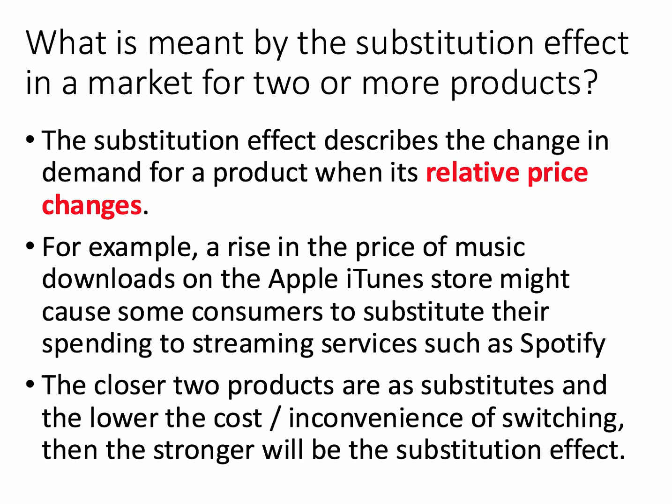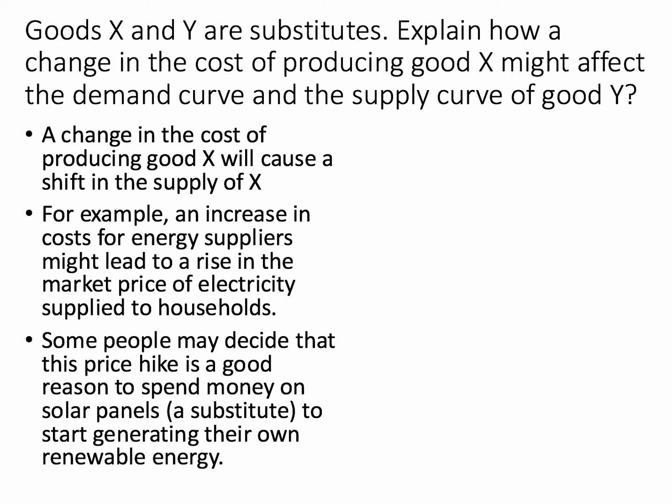This is of course linked in with the concept of cross price elasticity of demand. Here's a related question: goods X and Y are substitutes. Explain how a change in the cost of producing X might affect the demand curve and the supply curve of good Y, a substitute. Here's the explanation in words first.